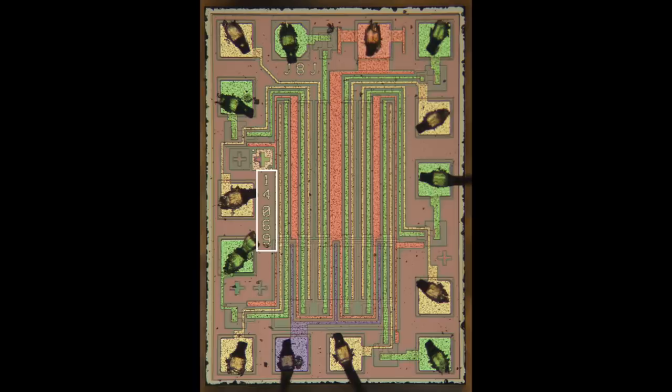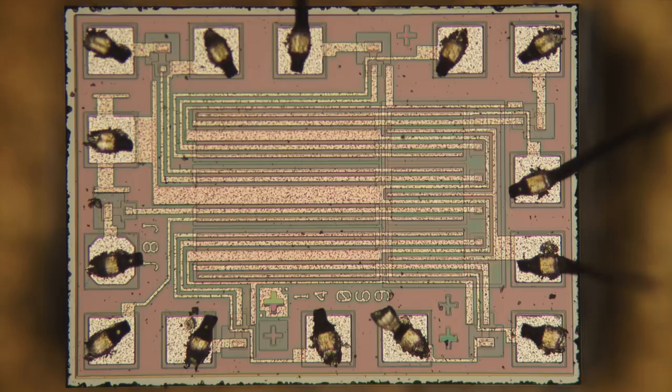You can see the part number over here, 14069. RCA introduced the 4000 series of CMOS chips in 1968. For some reason, Motorola uses the 14000 numbers for the same series of chips. There you have it from the Master himself.